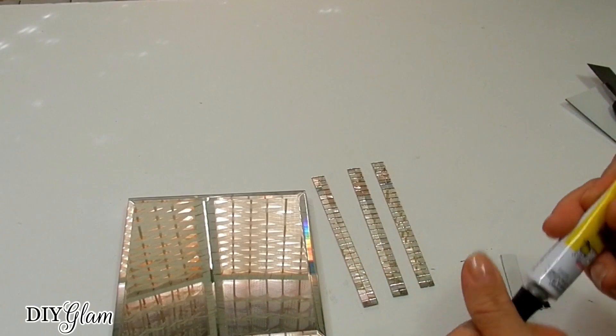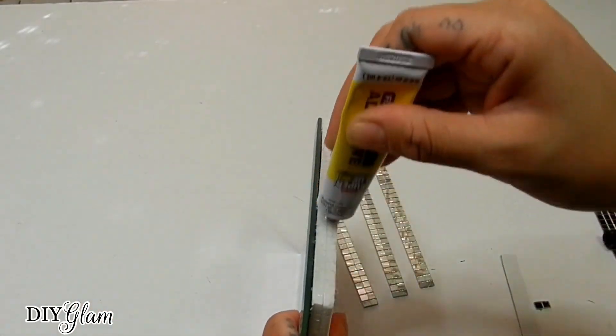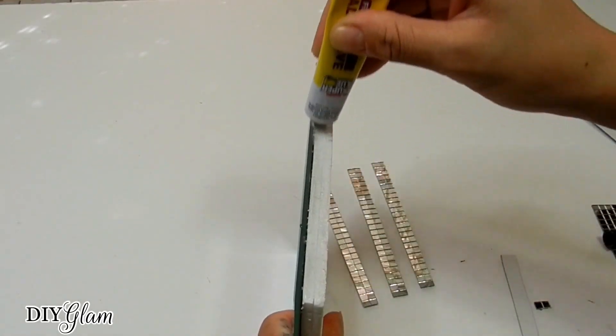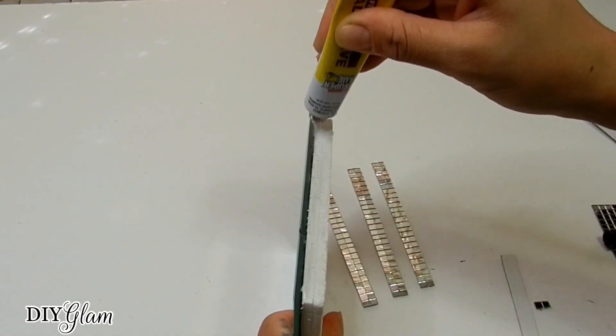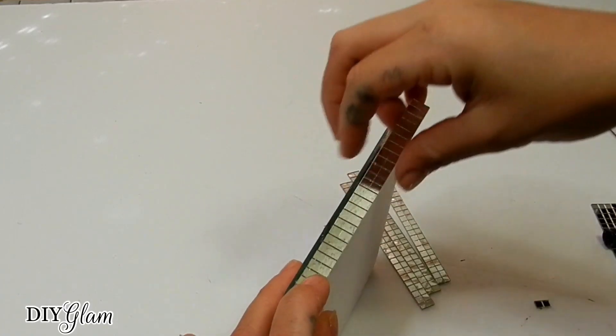Now I'll be taking some strong adhesive and some strips of those mirror tiles and I'm going to be adding that to cover up the foam board at the back of my mirror. I got these mirror tiles on Amazon, I will have them linked down below.